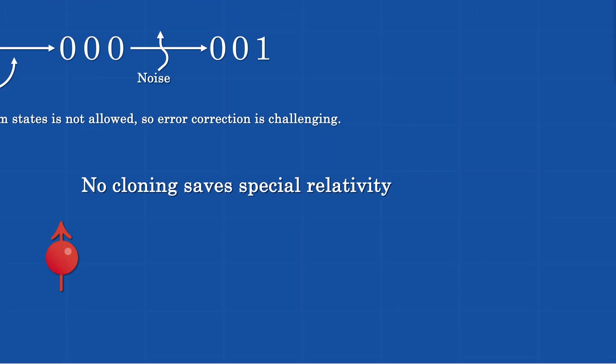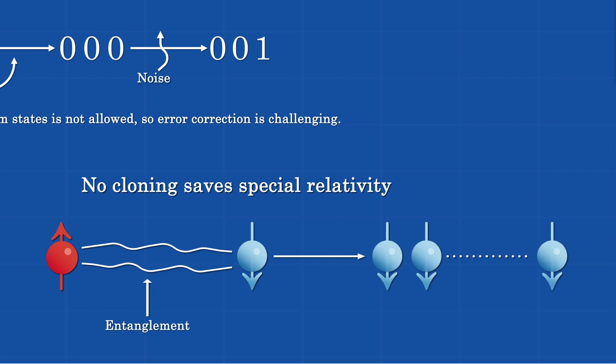No cloning, strangely, prevents us from communicating faster than light. If you could clone, using entanglement, you could communicate superluminally, as discussed in the history section. It is really surprising how features of quantum mechanics, such as linearity, prevent us from breaking relativity, which a priori has nothing to do with quantum mechanics.